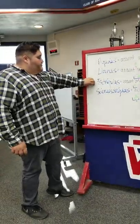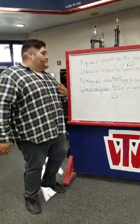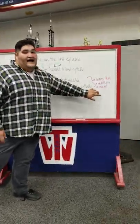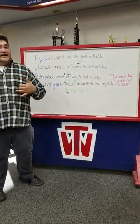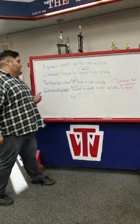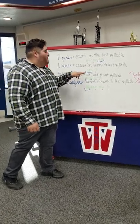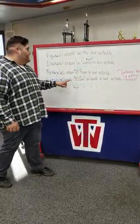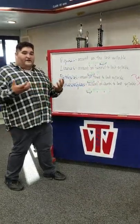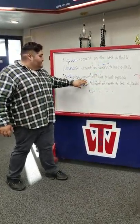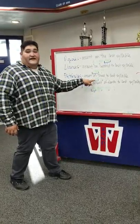Now we have your esdrújulas and your sobreesdrújulas. Something very important to note about these words is that they always have a written accent — there's never a debate on whether they have a written accent or an acento tónico; they will always have a written accent. With your palabras esdrújulas, you always accent on the third to last syllable from right to left. The example is the word brújula, and when you say brújula all the way through, the third syllable has the most emphasis. And as mentioned, it always has a written accent.